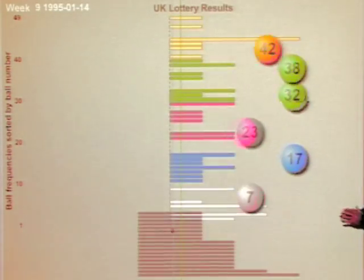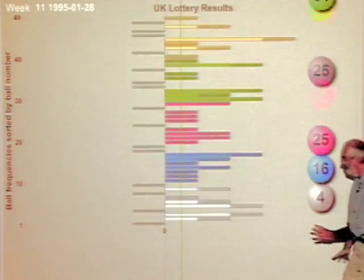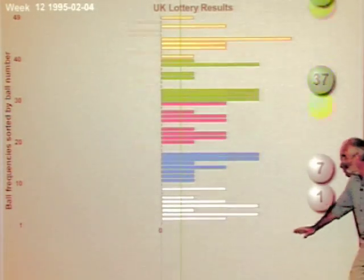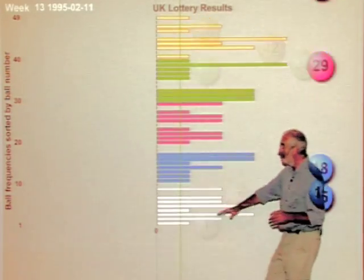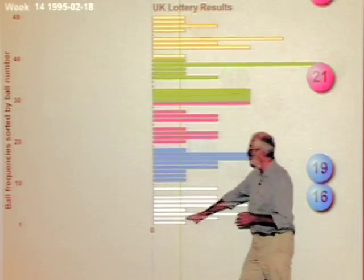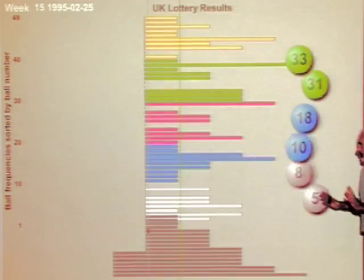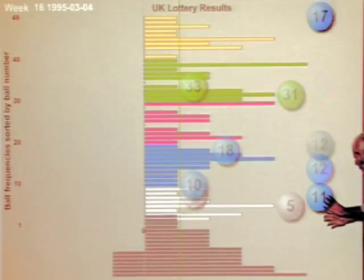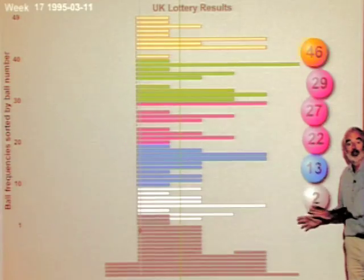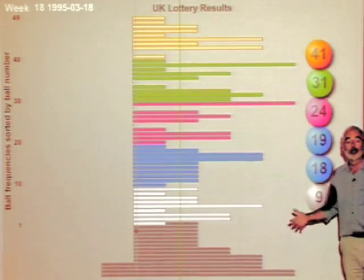We can then create a distribution which shows that some numbers have occurred as jackpot numbers very often and some numbers are not occurring at all or have hardly occurred yet. Now the point is that this distribution — we can check whether this is just what we'd expect by chance alone by using a bit of probability theory.